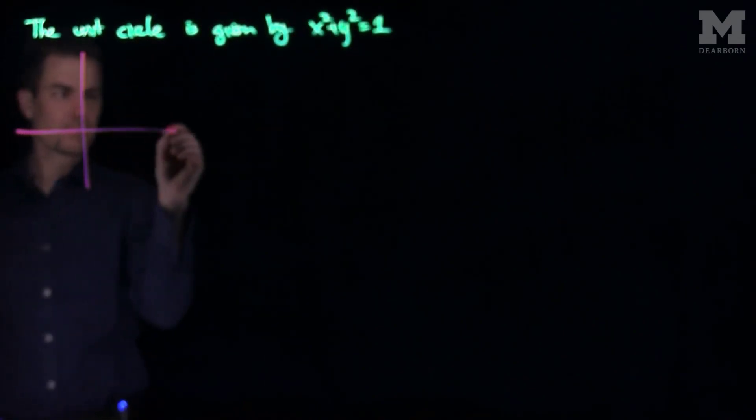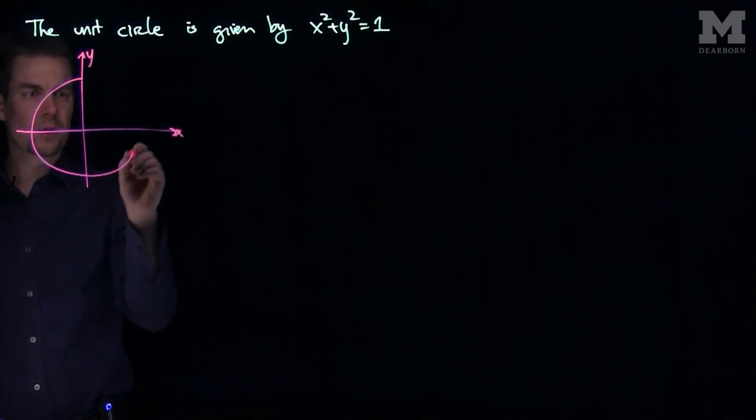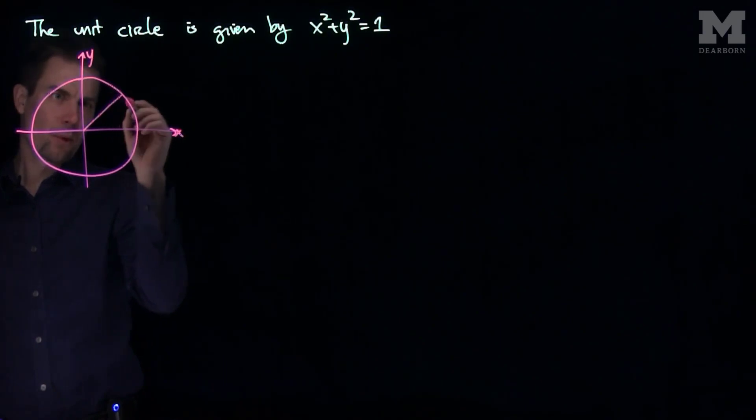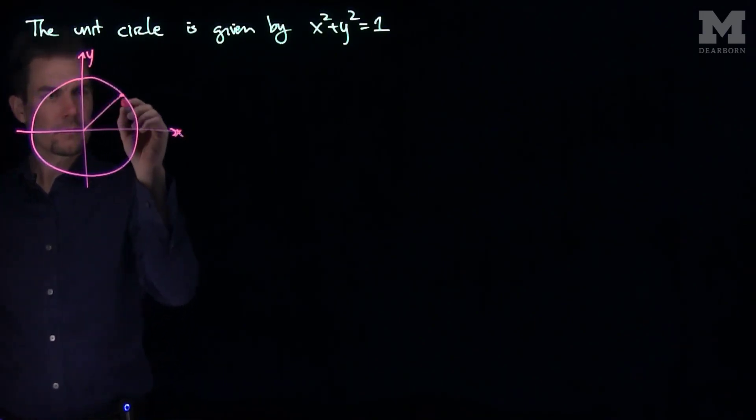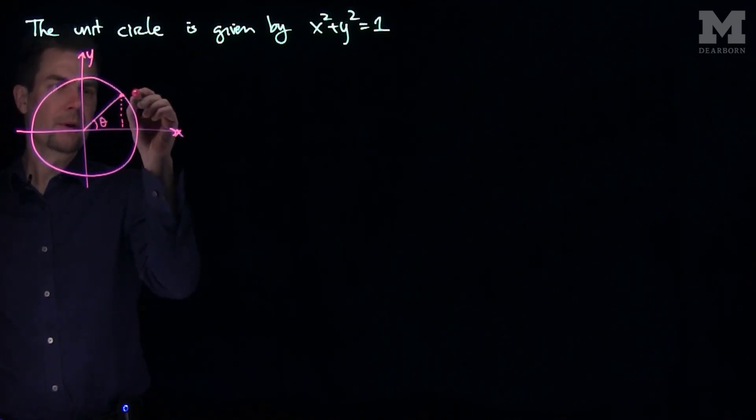We know the unit circle comes from trigonometry. This is the x-axis and the y-axis. It's all the points whose distance away from the origin is equal to 1. We know that any point on the unit circle, if this is my angle theta, can be written as the cosine of theta comma the sine of theta.